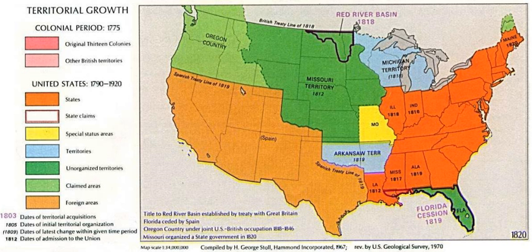Southerners objected to any bill which imposed federal restrictions on slavery, believing that slavery was a state issue settled by the Constitution. However, with the Senate evenly split at the opening of the debates, both sections possessing eleven states, the admission of Missouri as a slave state would give the South an advantage. Northern critics including Federalists and Democratic Republicans objected to the expansion of slavery into the Louisiana Purchase Territory on the constitutional inequalities of the Three-Fifths Rule, which conferred Southern representation in the federal government derived from a state's slave population.